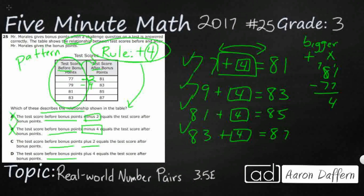And so what we see left is we've got two pluses. So we've got a plus 2. 81 plus 2, that's going to get us close, but not quite the answer. Our answer is going to be D. The test score before bonus points plus 4 equals the test score after. So that's our answer. D plus 4.